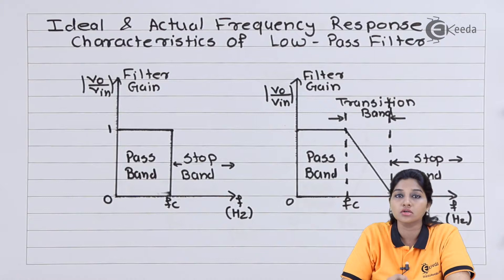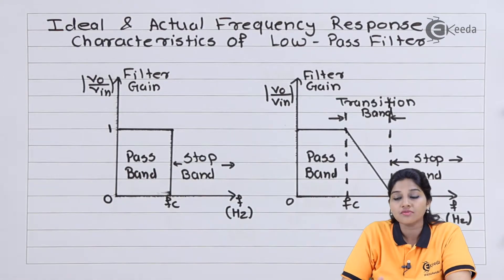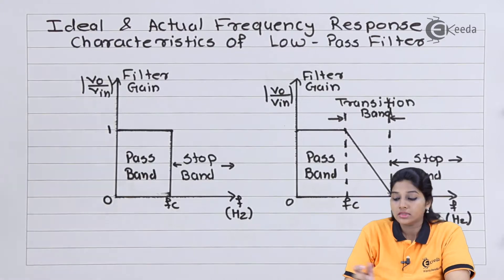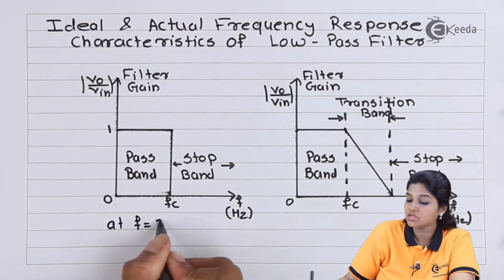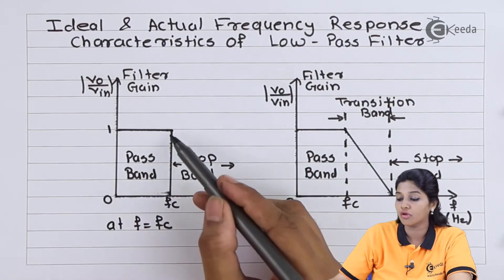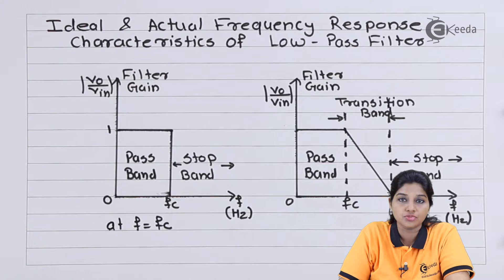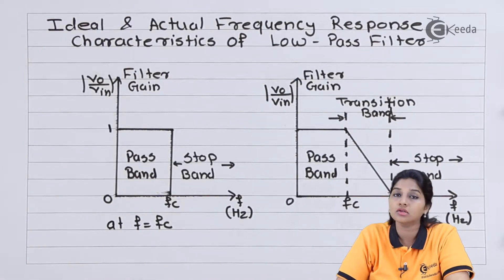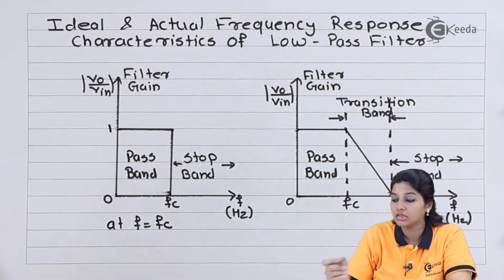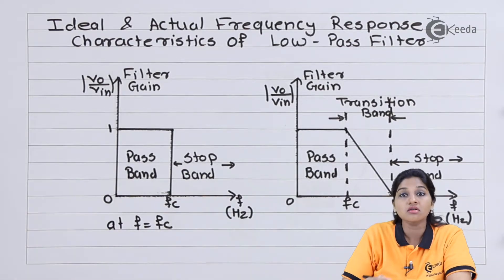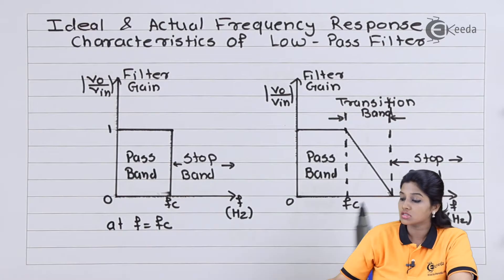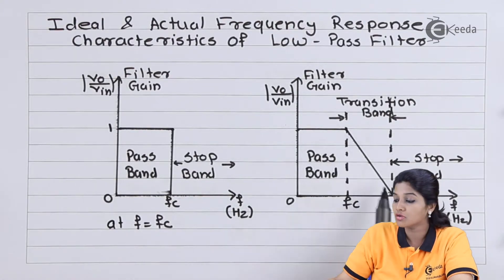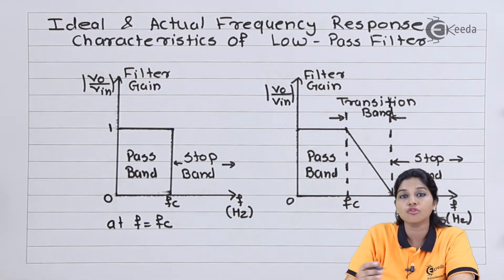The band of frequency which is passed by the filter is called the pass band, whereas after fc, the band of filter is attenuated or stopped by the filter, and that band is called the stop band. Ideally, at f equals fc, the gain makes a sudden transition from 1 to 0, but practically this is not possible. At f equals fc, practically the gain starts to reduce gradually. Sudden transition is not possible in practical applications. The band of frequencies during which the gain reduces from 1 to 0 is called the transition band in case of practical frequency response.